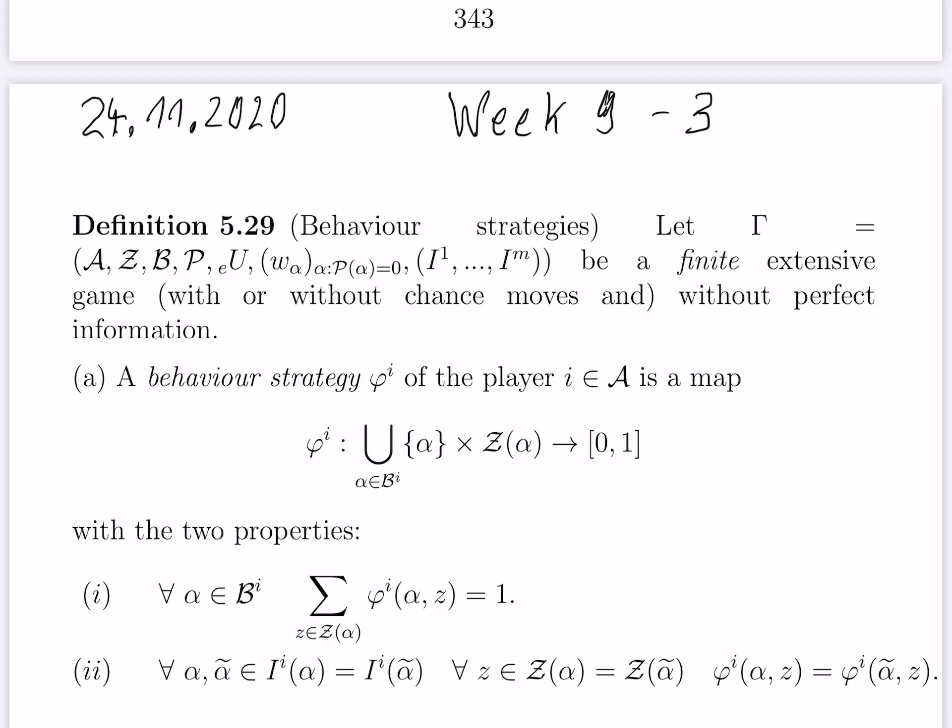So gamma is again a finite extensive game with or without chance moves and without perfect information. A behavior strategy phi upper index i of player i is a map from the union over all plays alpha, of the set of moves which are possible after alpha where player i has to do the next move, to the real interval from 0 to 1. I want two properties. First, I want that the restriction for any alpha is a probability distribution on the set of possible moves after the play alpha. So the sum of these values for all possible moves after the play alpha is 1.